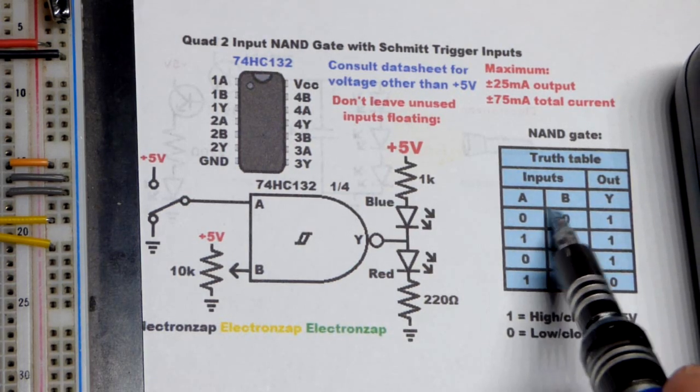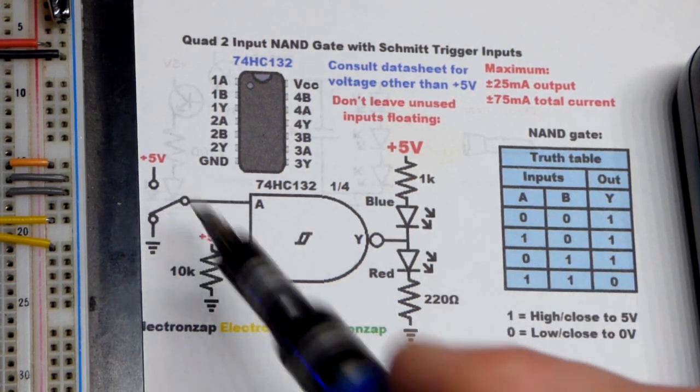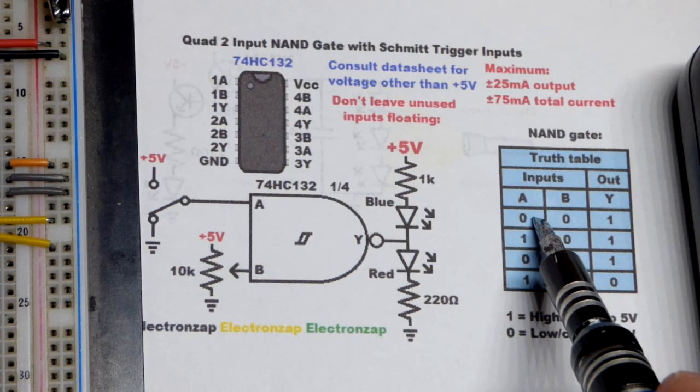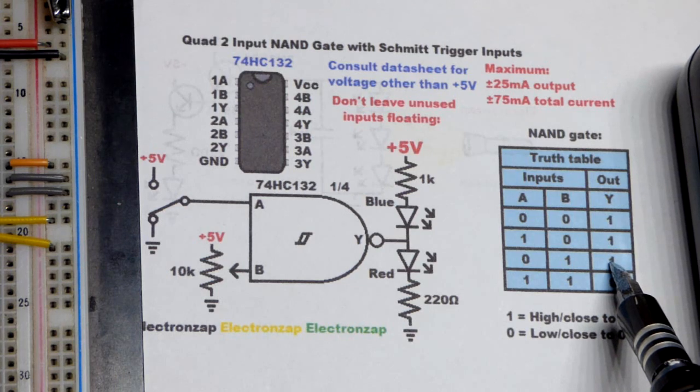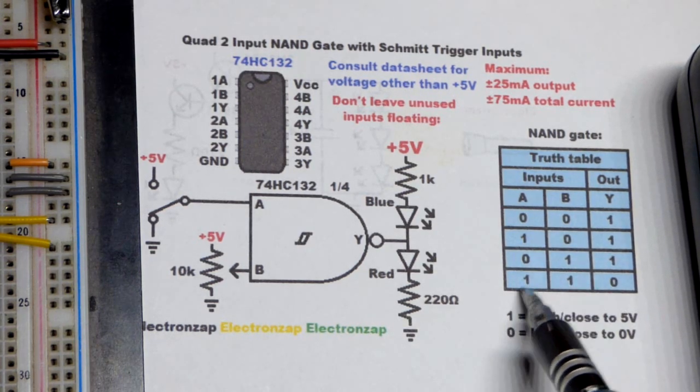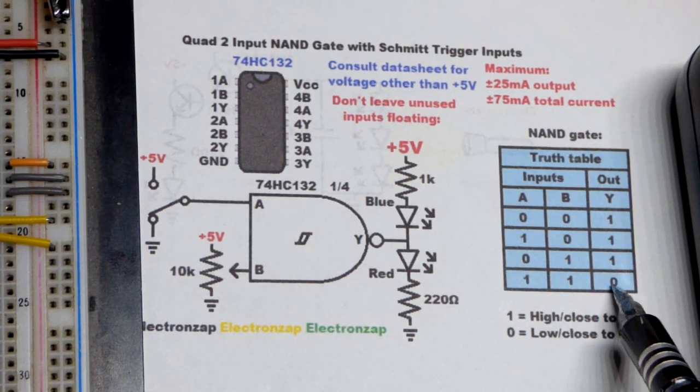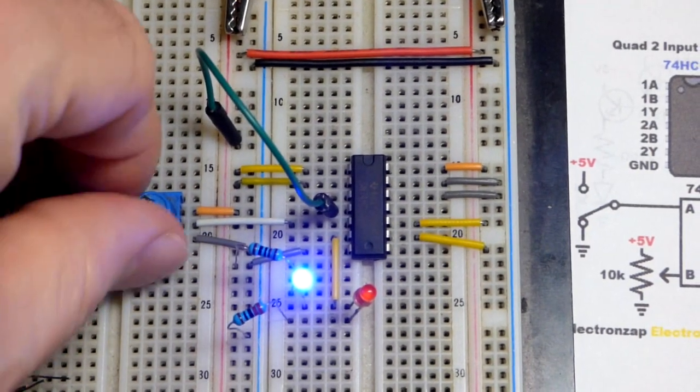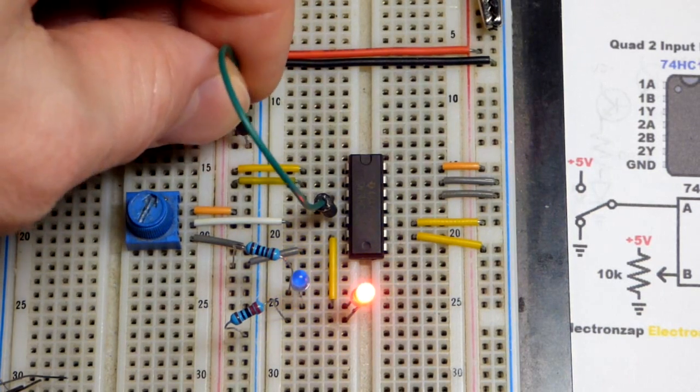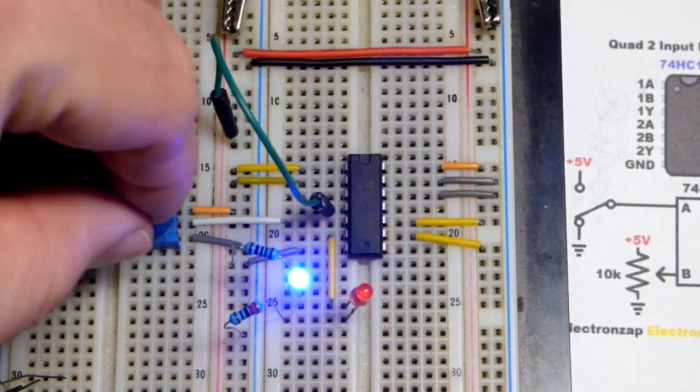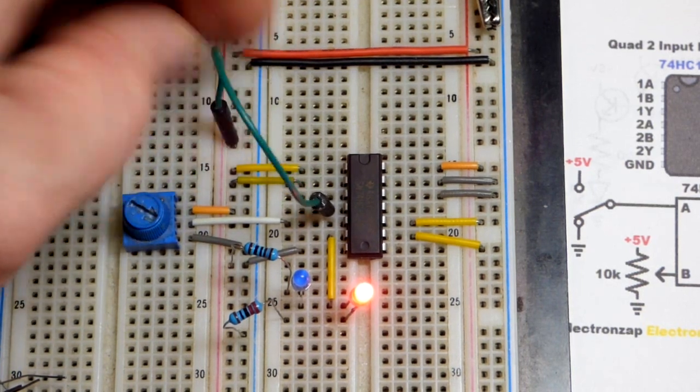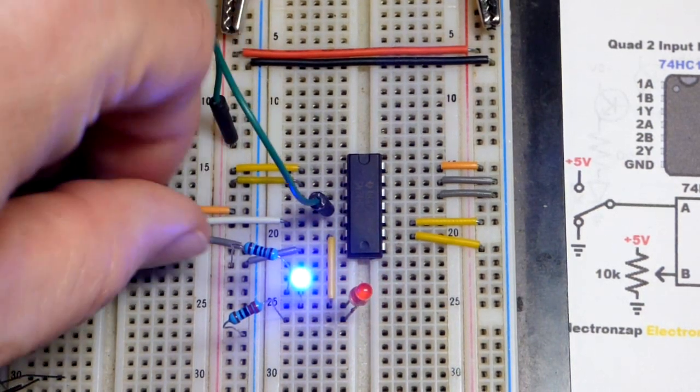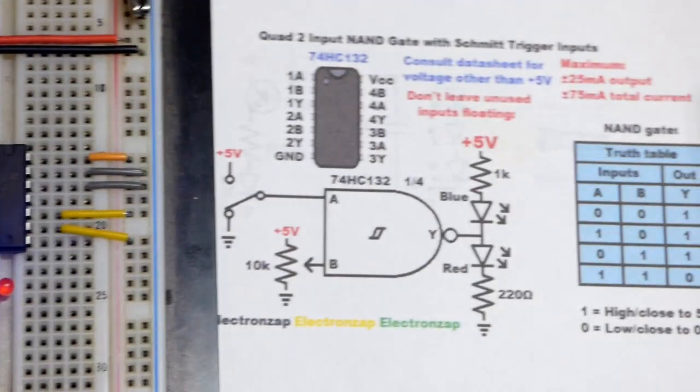In any case, we have the truth table here. If there's any low, so there's three options, since we have two inputs that are either high or low. Any low means the output will be high. That's the red LED. The only time that we got the blue LED to light up was when both inputs were high. So we'll come back and look at that again. So high and high. One low, it's red there. The other one low, it's red. And of course, both of them low, it's red. They both have to be high, as we saw before.